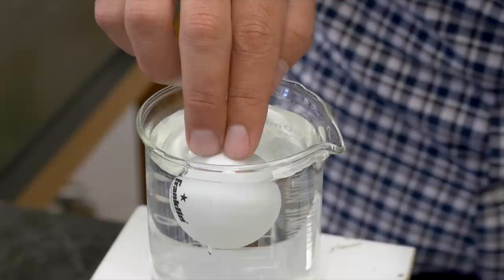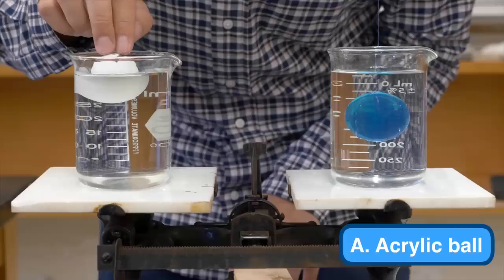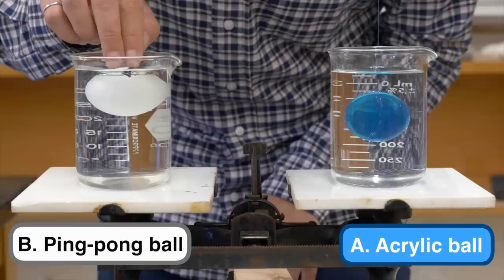In that case, what do you think would happen when the scale was allowed to rotate? Would it tilt down A towards the hanging acrylic ball or B down towards the ping-pong ball, which is now just barely submerged under the water? Or C, would the balance remain perfectly balanced?